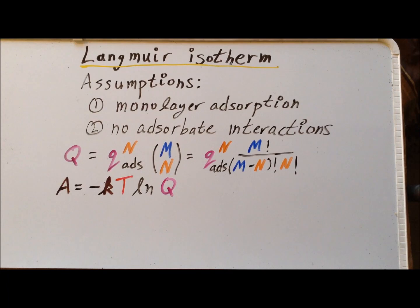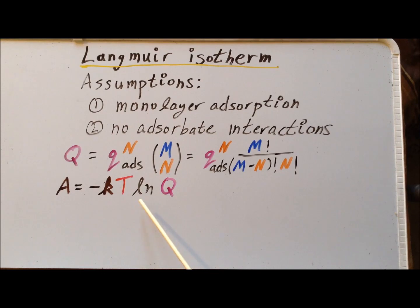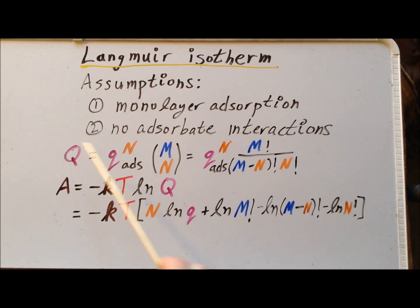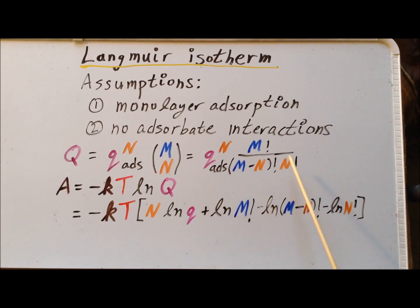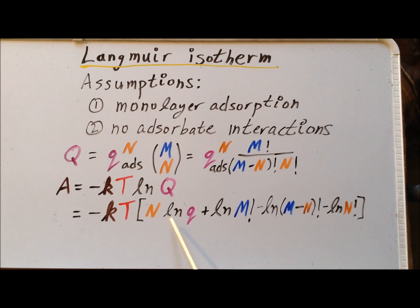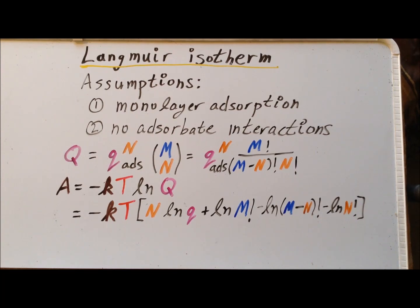Next, we relate the Helmholtz free energy A and the partition function Q using the identity that A is equal to minus kT times the natural log of Q. Now we substitute our expression for Q into our expression for A, and make use of the properties of the natural log. Taking the natural log of this expression gives us minus kT times: n times the natural log of q, plus the natural log of m factorial, minus the natural log of (m minus n) factorial, minus the natural log of n factorial.